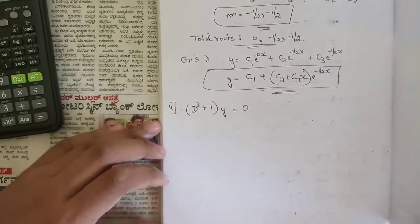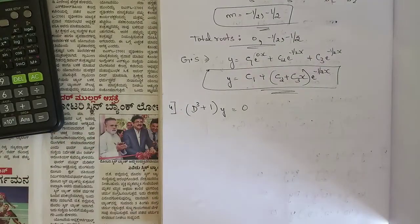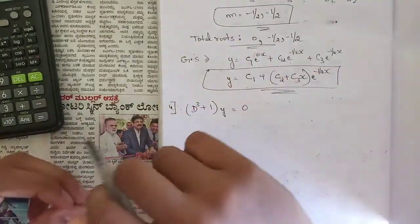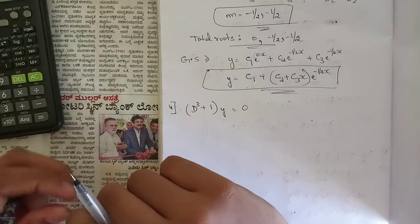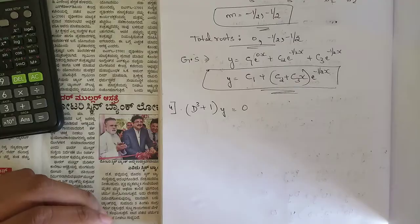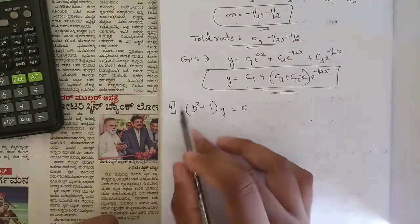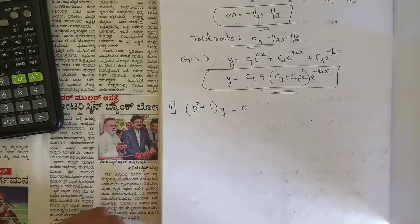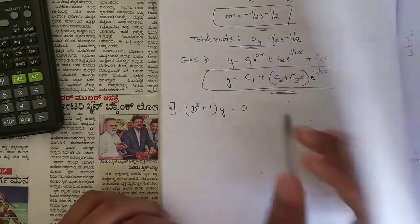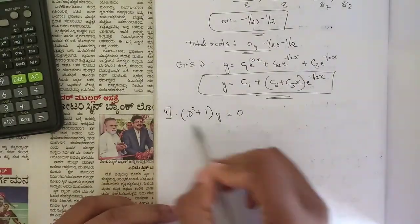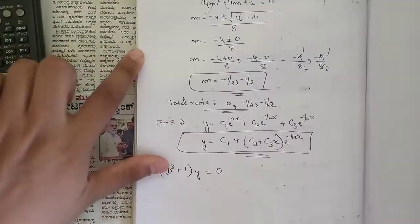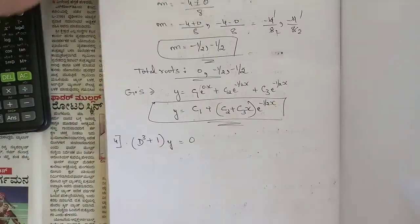Hello everyone, welcome to this second session of this module. In the last session we were discussing homogeneous problems. We are going to continue that without wasting time, since there are many problems to be solved in this module. This is the fourth question, given as (D³ + 1)y = 0. Here it is not given in derivative form; they have directly written it as D³ + 1 = 0.